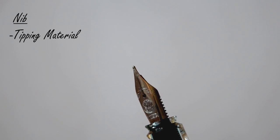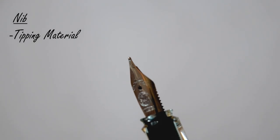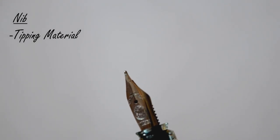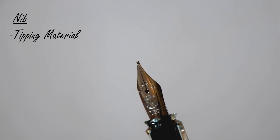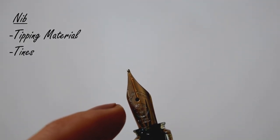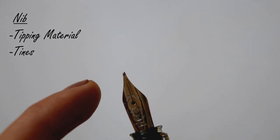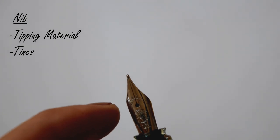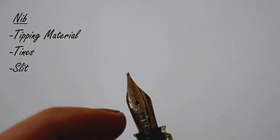Nib sizes on a standard level range from extra fine to fine to medium and broad. The next part we'll be focusing on are the tines, which are the parts on the sides of the slit. The slit is the thin line that you see right there, and this slit helps the ink from the feed move through to the tip of the pen.